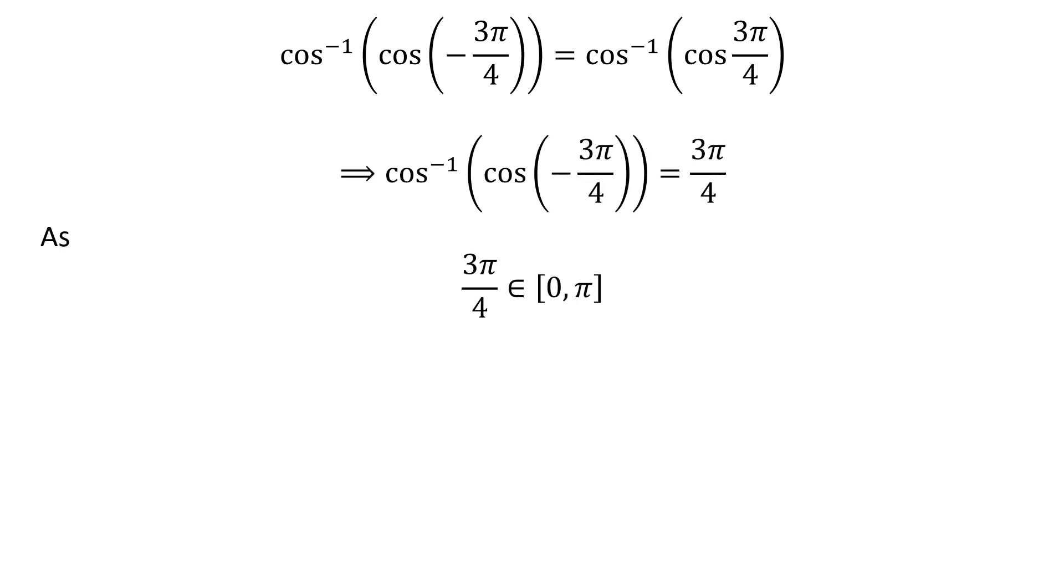So application of properties of inverse function gives us inverse of cosine of cosine of minus 3 times pi upon 4 is equal to 3 times pi upon 4, as 3 times pi upon 4 belongs to the closed interval of 0 and pi.